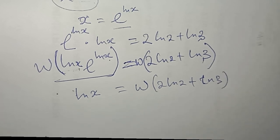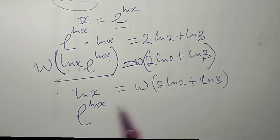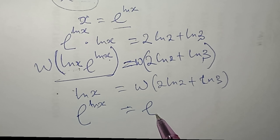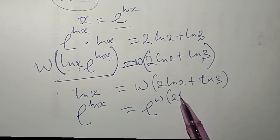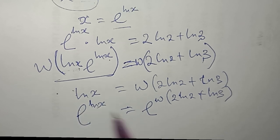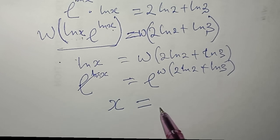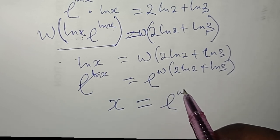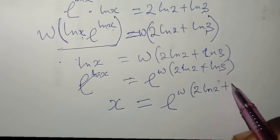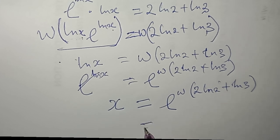To get x by itself, I take the exponent of both sides. The left side becomes e^(ln x), which simplifies to just x. So finally, x equals e to the power of W(2·ln(2) + ln(3)).